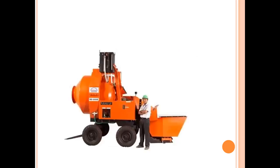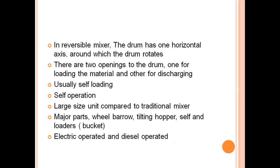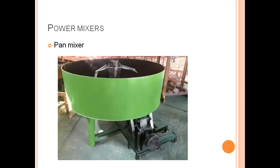In the reversible mixer, the drum has one horizontal axis around which it rotates. There are two openings: one for loading and another for discharging the material. These are usually self-loading and self-operating, and are larger-sized units compared to traditional mixers. Major parts include a wheelbarrow, tilting hopper, self-loader buckets, and both electric and diesel operated machines are available.